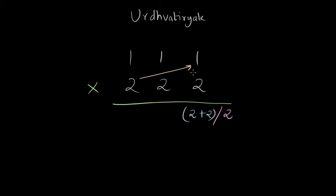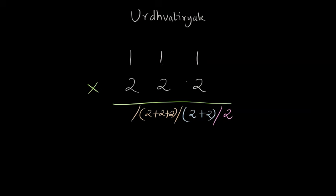In Urdhva Thiryak, we multiply two with one, two with one, and two with the one in the middle. The result is the addition of all these multiplications: two times one, plus two, plus two. Then we go for the cross multiplication on the four digits on the left — two times one plus two times one, which is two plus two. After completing this, we go for the vertical multiplication on the leftmost digits, which is two times one, or two.